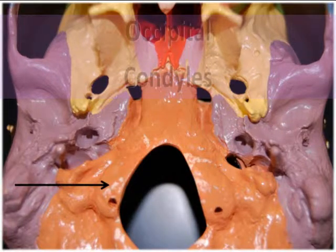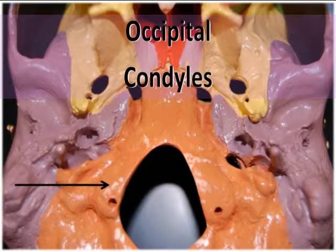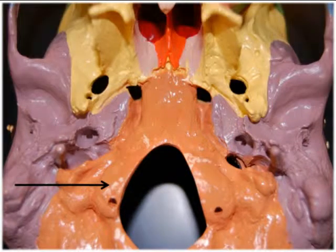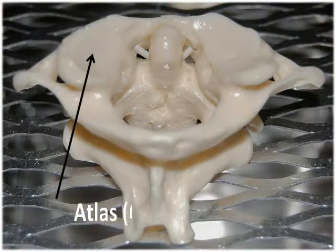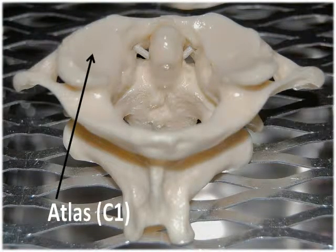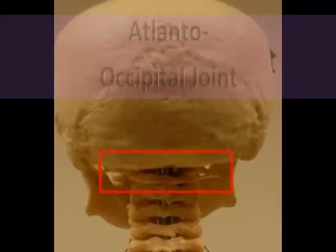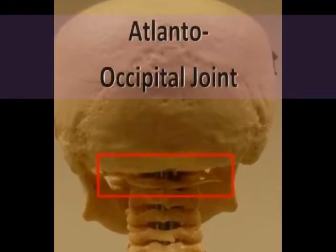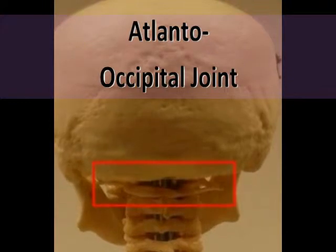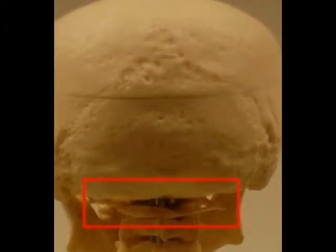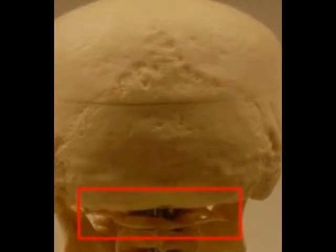Located on both sides of the foramen magnum are round processes known as the occipital condyles. These have shallow convex grooves that articulate with the atlas, which is the first cervical vertebra, C1. Together the occipital condyles and the atlas form the atlanto-occipital joint. This joint allows us to nod our heads up and down in the yes motion.